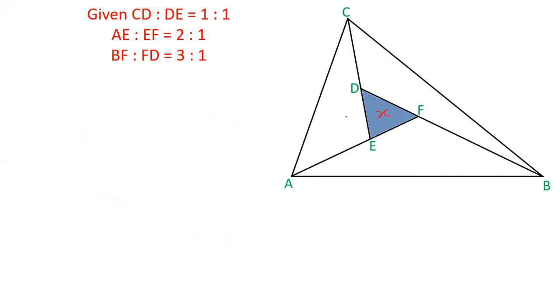Let us suppose area of triangle DEF is X. The ratio of CD and DE is equal to 1:1. Let us make some lines. Join AD, BE, and CF. If the ratio is 1:1 and this area is X, therefore the area of CDF is also X. So I am writing here X.